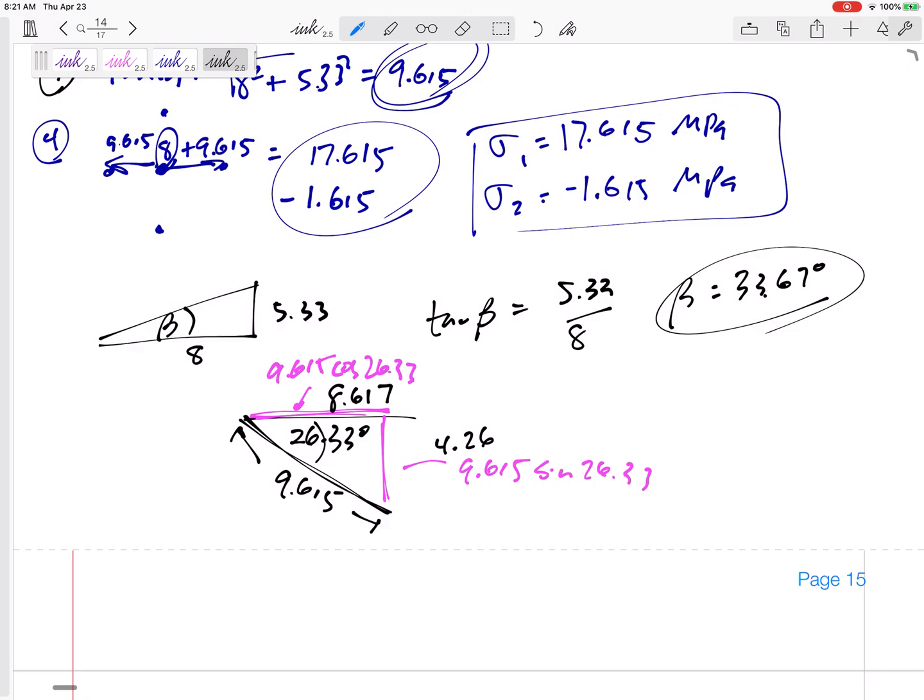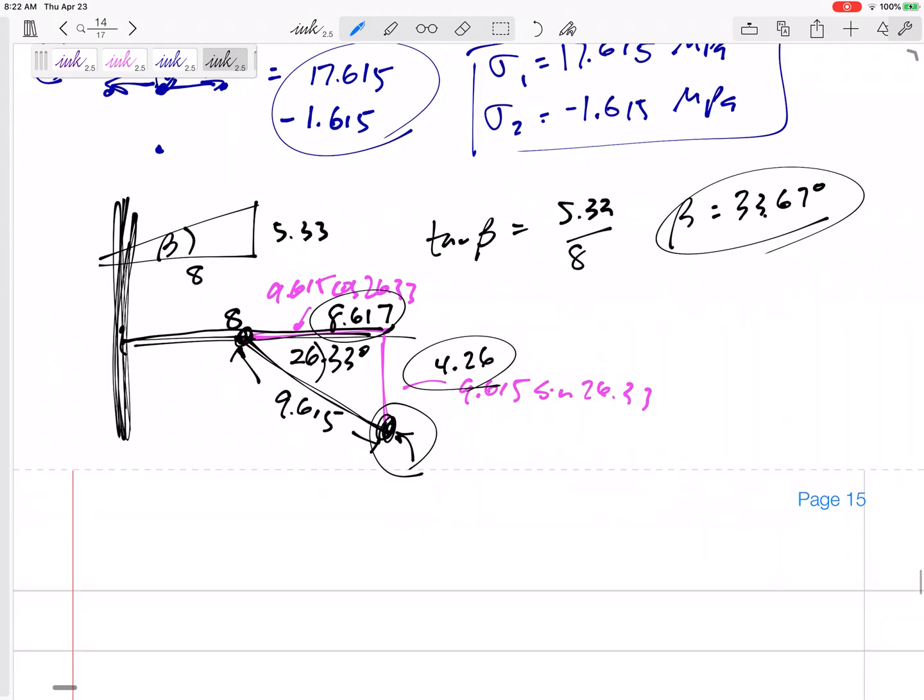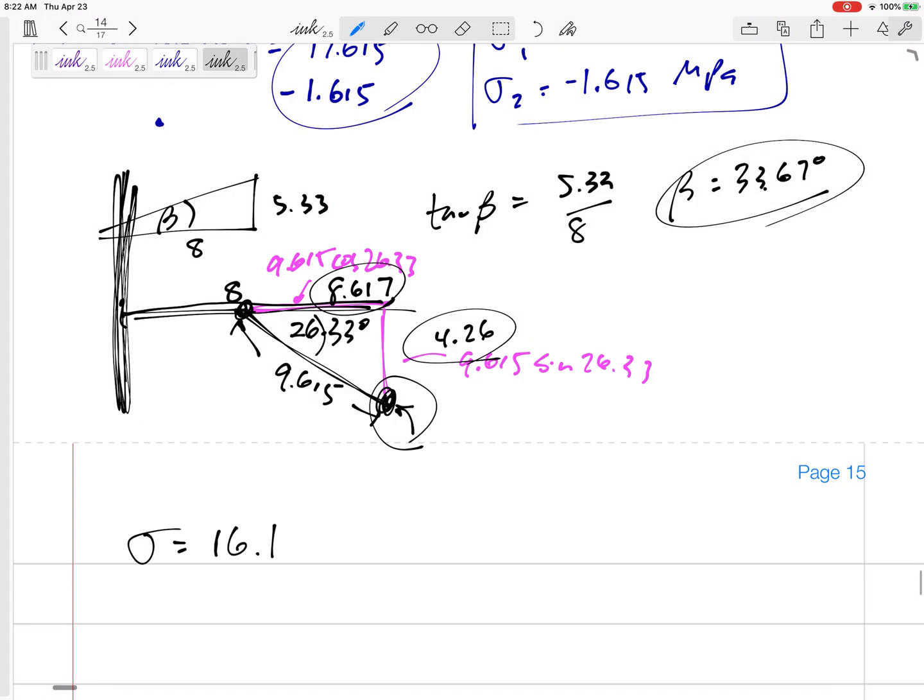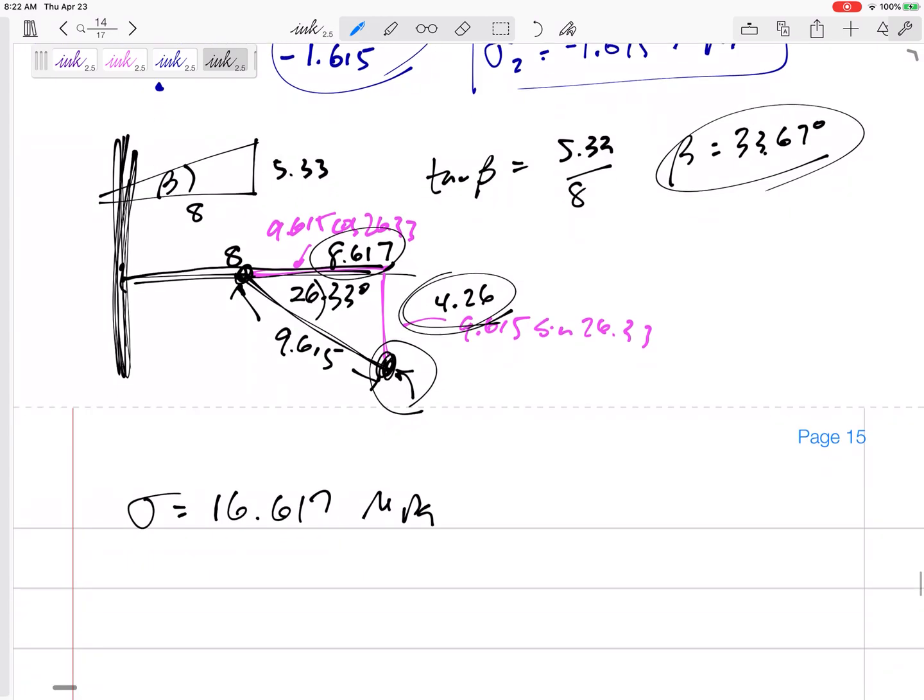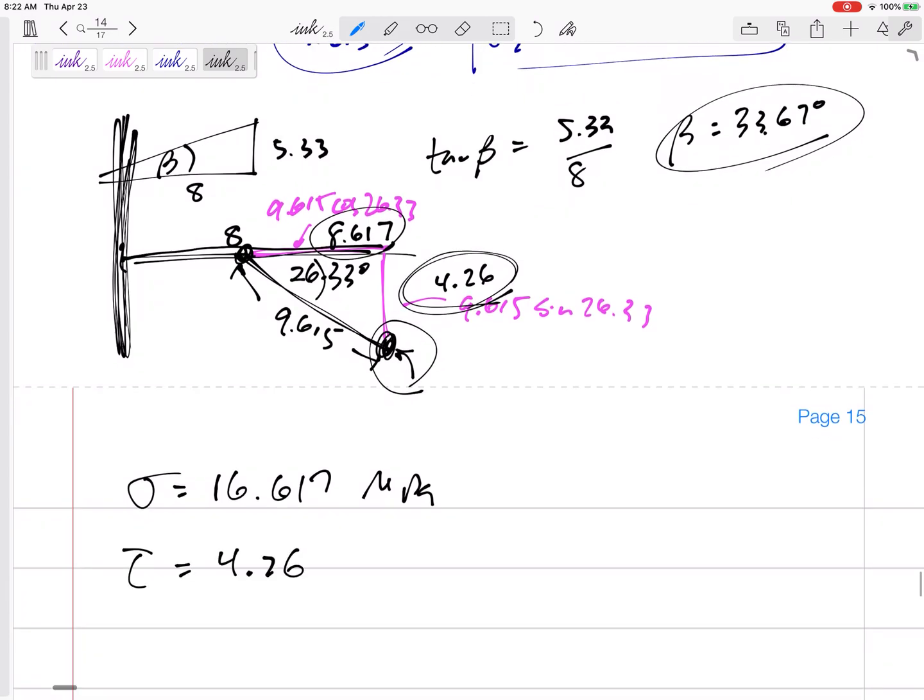So let me find this base and height. This would just be 9.615 sine 26.33. This would be 9.615 cosine 26.33. What are those values? The base is going to be 8.617, and this height 4.26. But those aren't my new stresses, not exactly. This point is still 8, right? Here's the origin. And I'm trying to find the coordinates of this point down here.